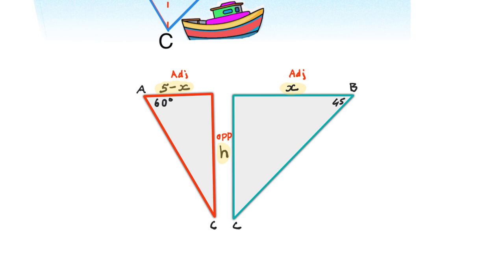The trigonometric ratio that we can use therefore is going to be tan for both sides. And so for the red triangle we'll say that tan 60, which is opposite over adjacent, will be equal to H over 5 minus X. Whereas the green triangle will have tan 45 and that will be opposite over adjacent which is H over X.